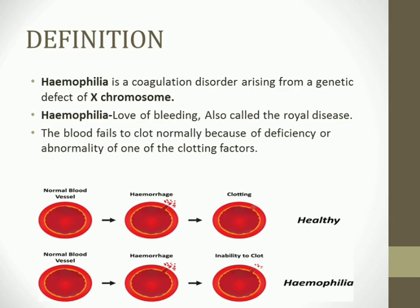In this disease, the blood fails to clot normally because of the deficiency or abnormality of one of the clotting factors. There are 13 clotting factors in the body, each very important for preventing blood loss after injury. In a healthy patient, hemorrhage is sealed by a clot, but in a hemophilia patient there is an inability of clot formation, and hemorrhage continues resulting in uncontrollable blood loss.